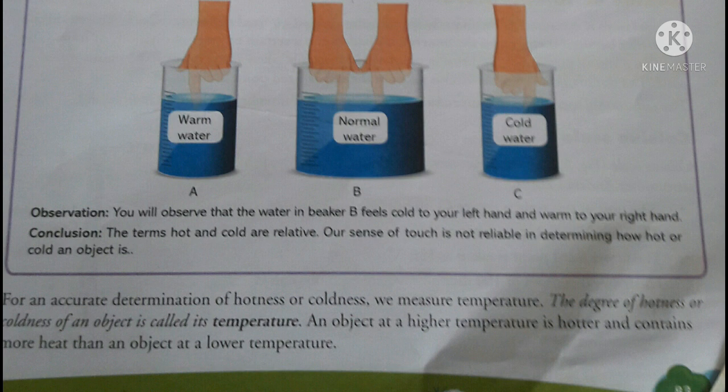For an accurate determination — if you want to find exactly how hot or cold an object is — we measure temperature. The degree of hotness or coldness of an object is called its temperature. An object at a higher temperature is hotter and contains more heat than an object at a lower temperature.